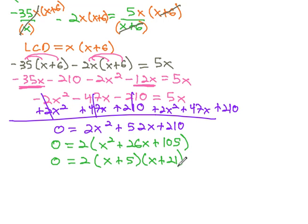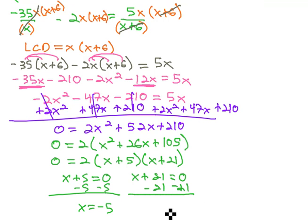And now we can get our x's by making each factor equal zero. x plus 5 equals zero, x plus 21 equals zero. Then solve the resulting equations by subtracting 5 to get x equals negative 5, and subtract 21 to get x equals negative 21.